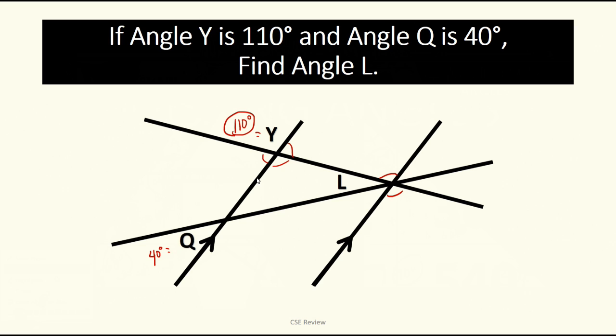Ngayon, nasabi natin pag across sila and if it's two lines na intersecting like that, itong line na ito makes this, itong angle Y, and itong angle na ito, supplementary angles. So, kung 110 siya, this would be 180 minus 110 or 70 degrees. Ngayon, pag across naman sila or tawid, notice ninyo, itong 110 ay nandito sa kabilang side, kapareho niya naman itong across sa kanya. So, ano yung ibig sabihin, kung 110 degrees yan, this would give you 110 degrees then. This would also be 70 degrees.